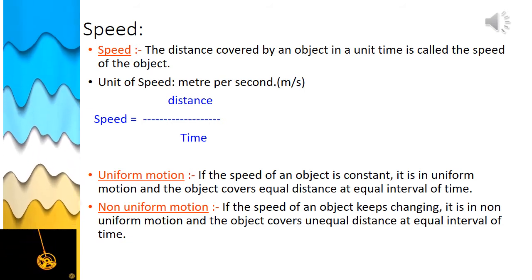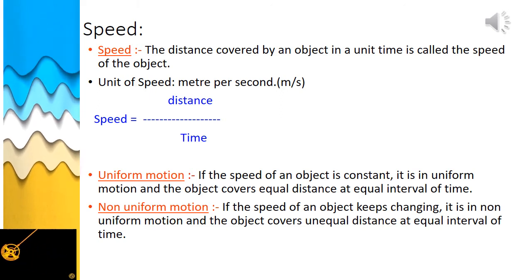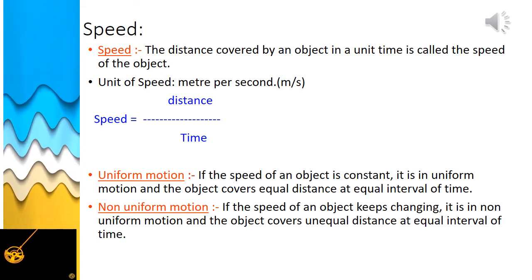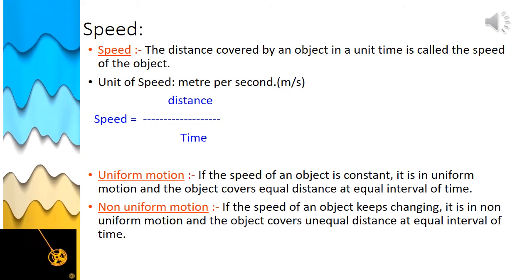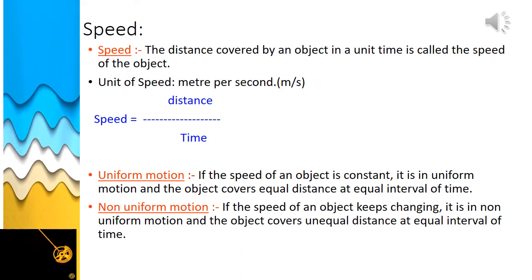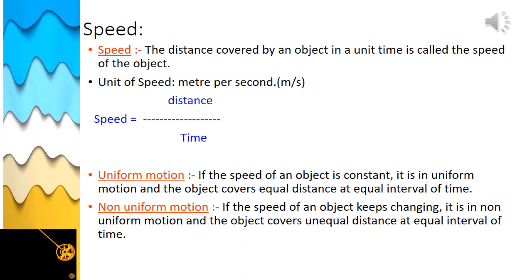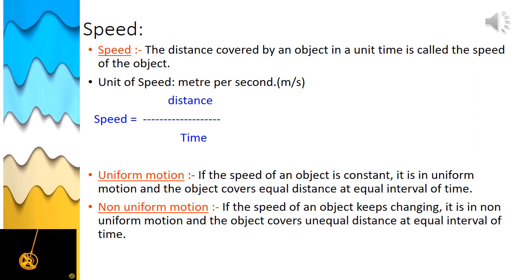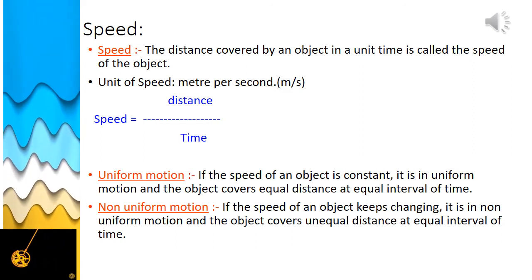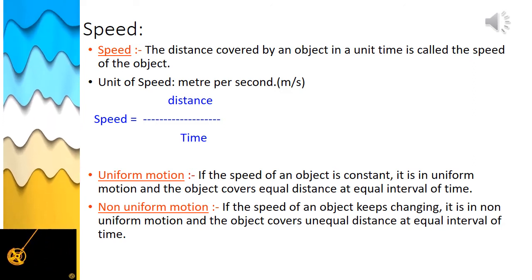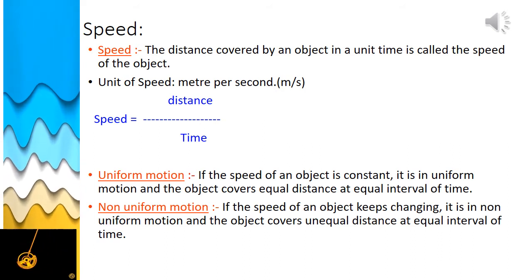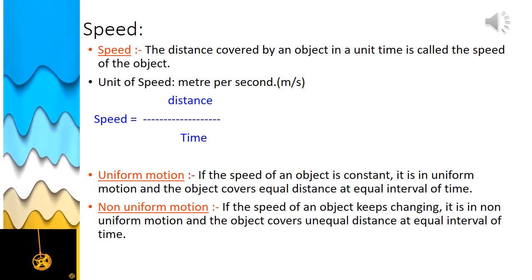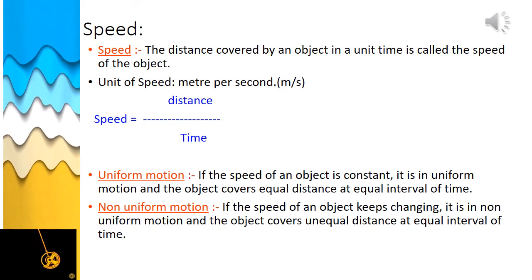There are mainly two kinds of motion: uniform motion and non-uniform motion. In uniform motion, the speed of an object is constant and it covers equal distances in equal intervals of time. In non-uniform motion, the speed keeps changing — the object covers unequal distances in equal intervals of time, or equal distances in unequal intervals of time.